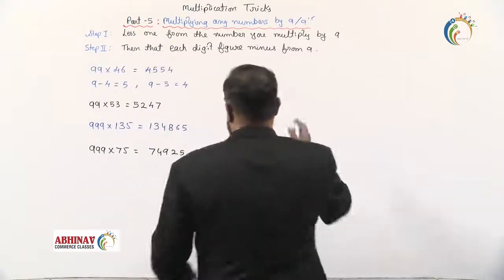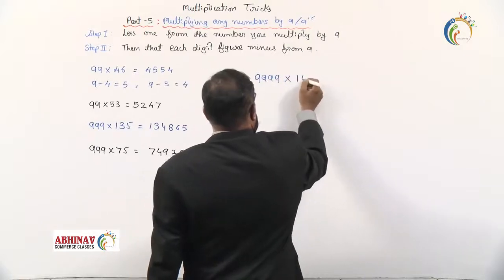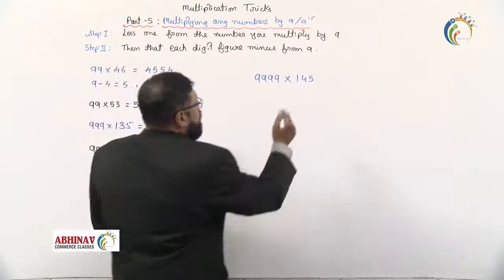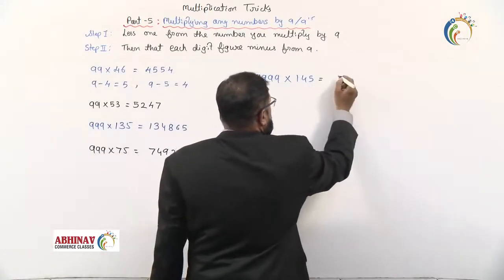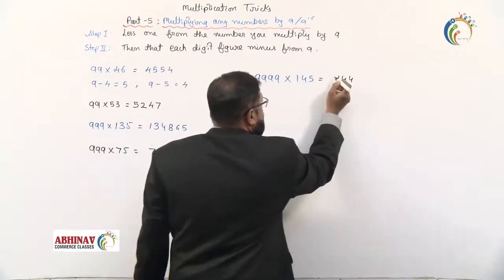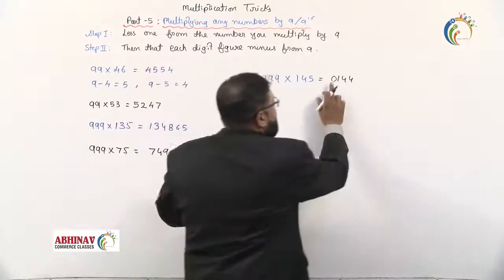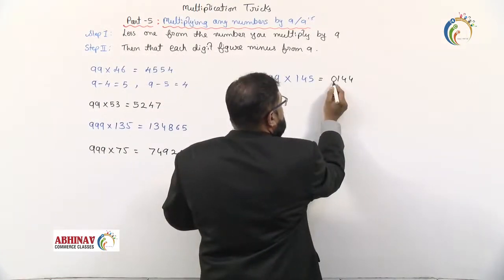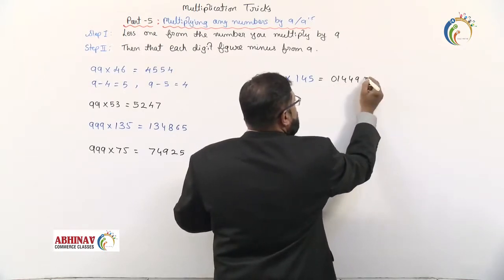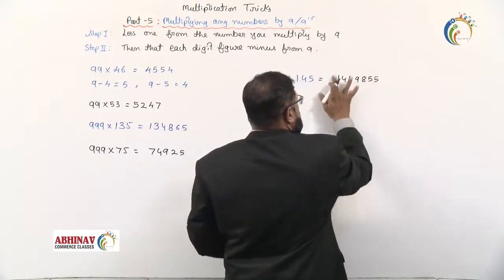Let's try a four-digit example: 9999 × 145. Subtract 1 from 145 to get 144. Since 9999 has 4 digits, make 144 into 4 digits by adding a leading zero: 0144. Subtract each digit from 9: 9 minus 0 is 9, 9 minus 1 is 8, 9 minus 4 is 5, 9 minus 4 is 5. The answer is 1,454,855.